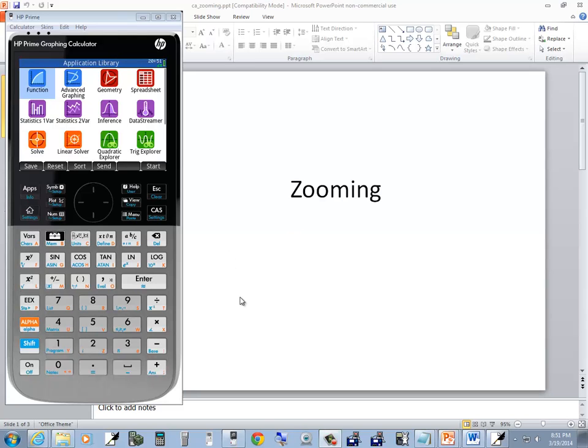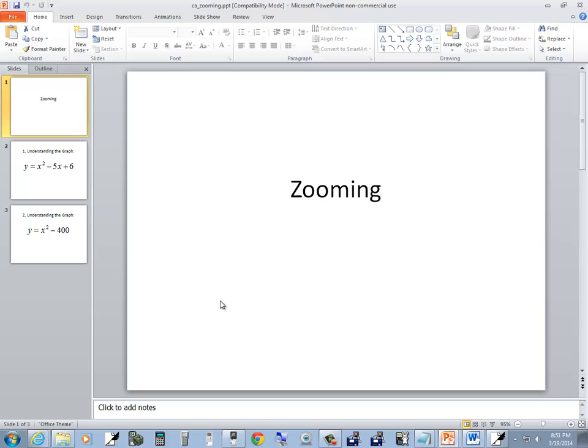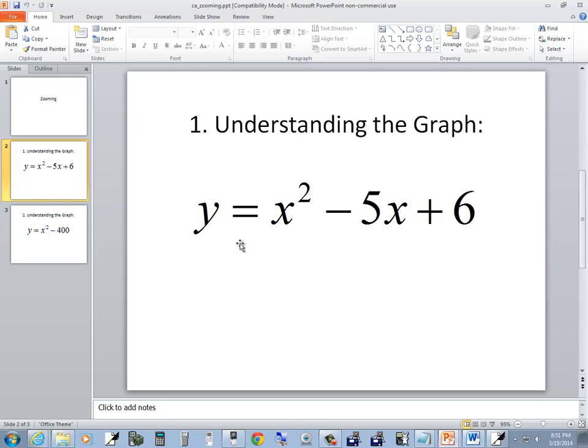Let's take a look at zooming on the HP Prime graphing calculator. Now the first one we'll be taking a look at is y = x² - 5x + 6.